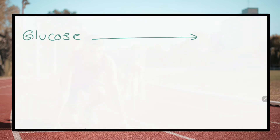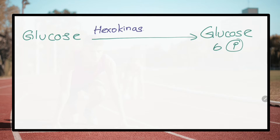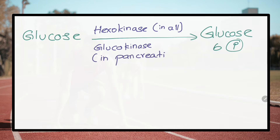What is the enzyme that catalyzes the first rate-limiting step of glycolysis? Glucokinase in pancreatic islets and liver parenchyma cells, and hexokinase in all other tissues.